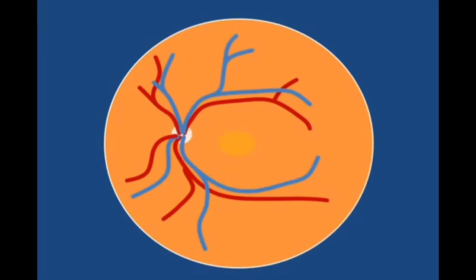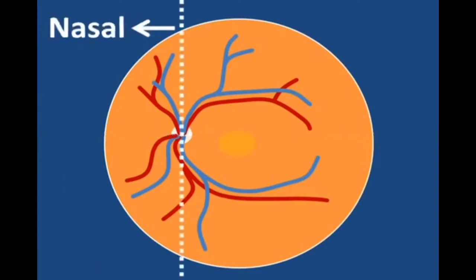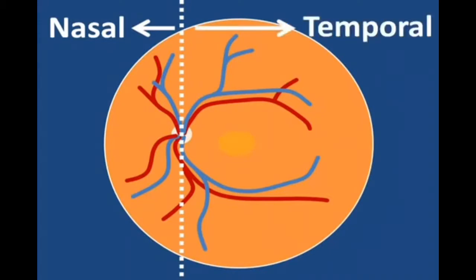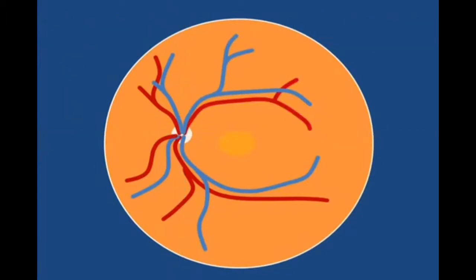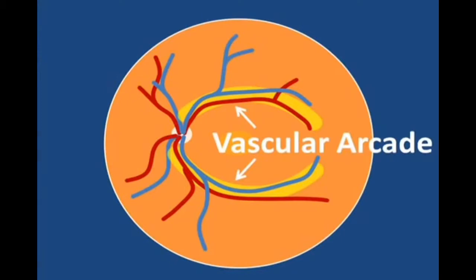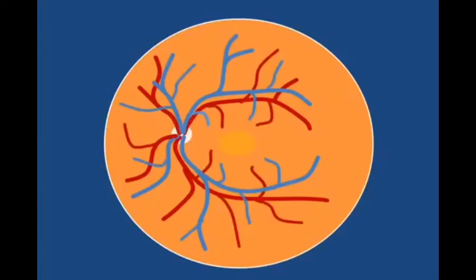When describing the major vessels of the retina, superior is used to describe the upper vessels, and inferior is used to describe the lower vessels. The term nasal describes the vessels closer to the nose, and temporal describes the vessels closer to the temple. So for example, this would be the superior temporal artery. The term vascular arcade refers to the vessels which form an arc around the central part of the retina. These major vessels, in real life, branch into progressively smaller vessels which reach into almost all areas of the retina.